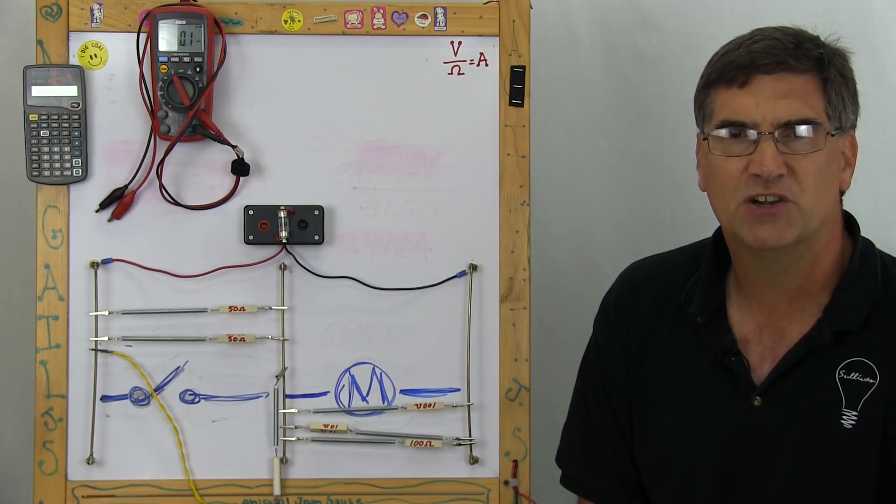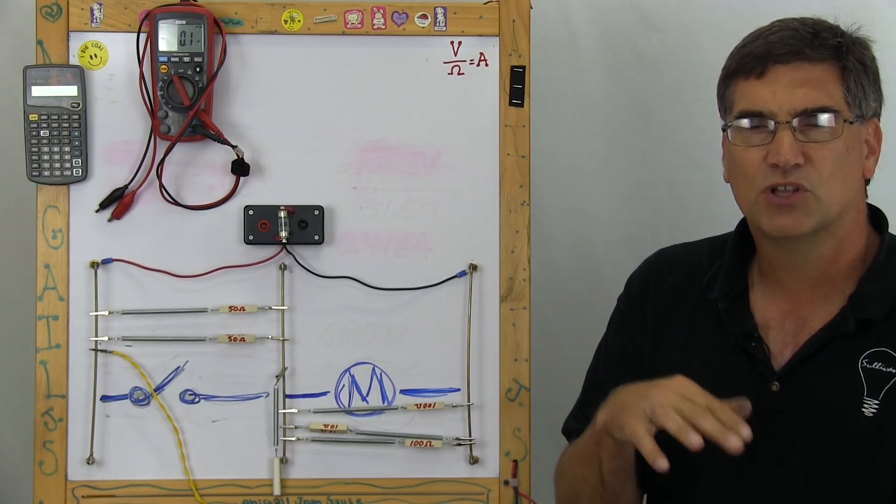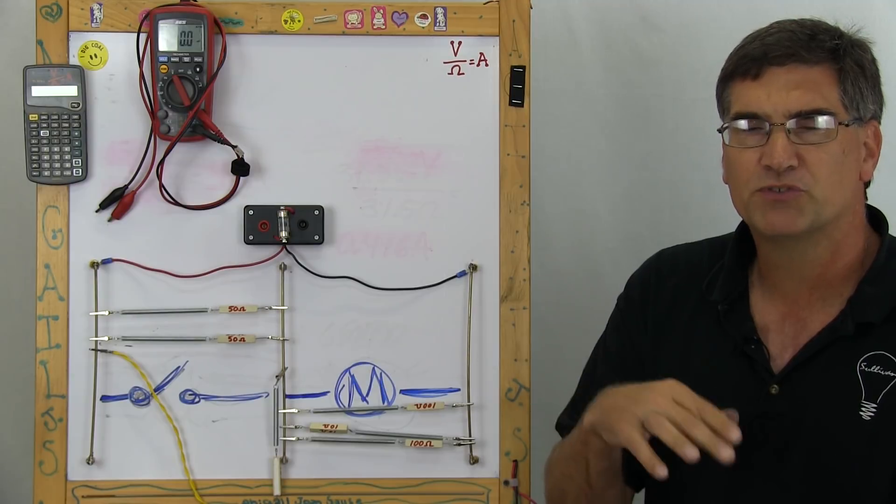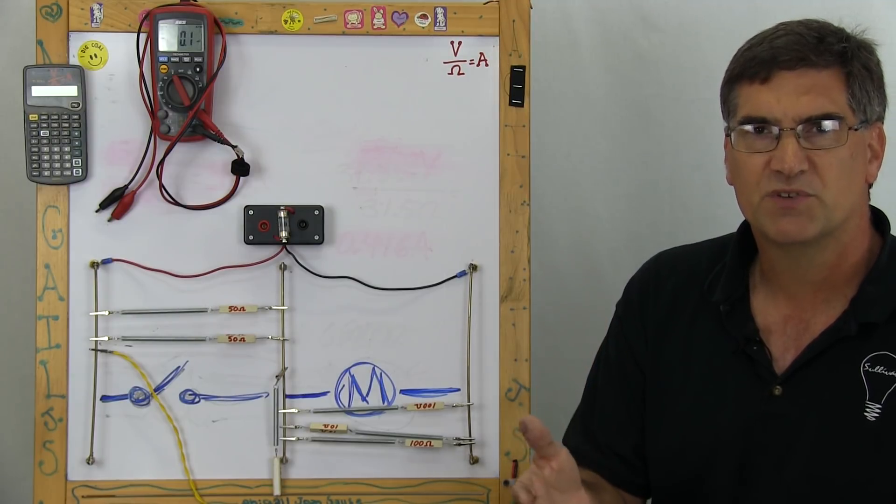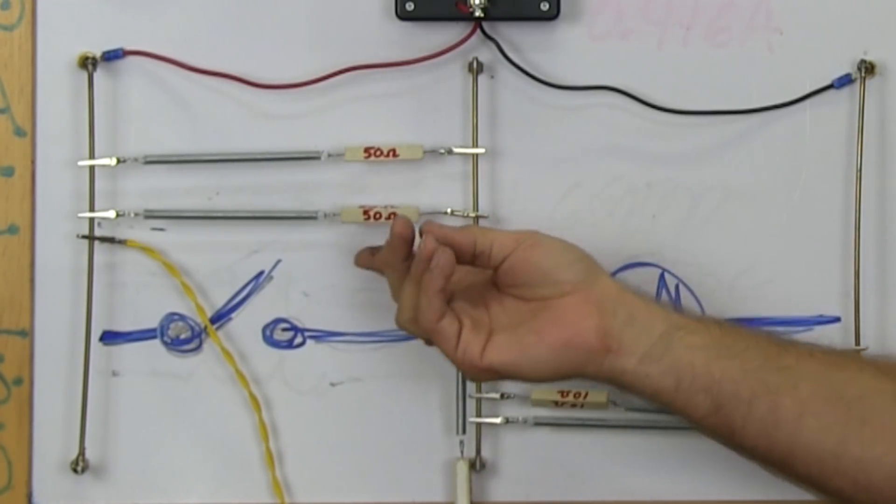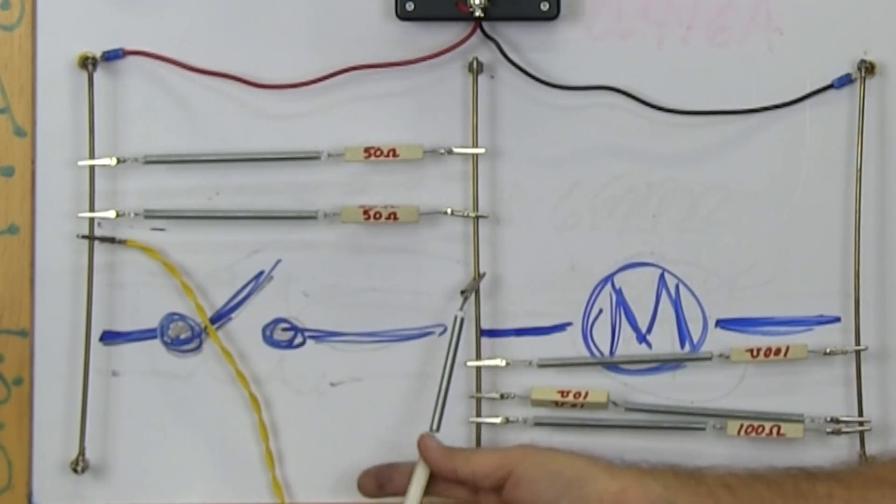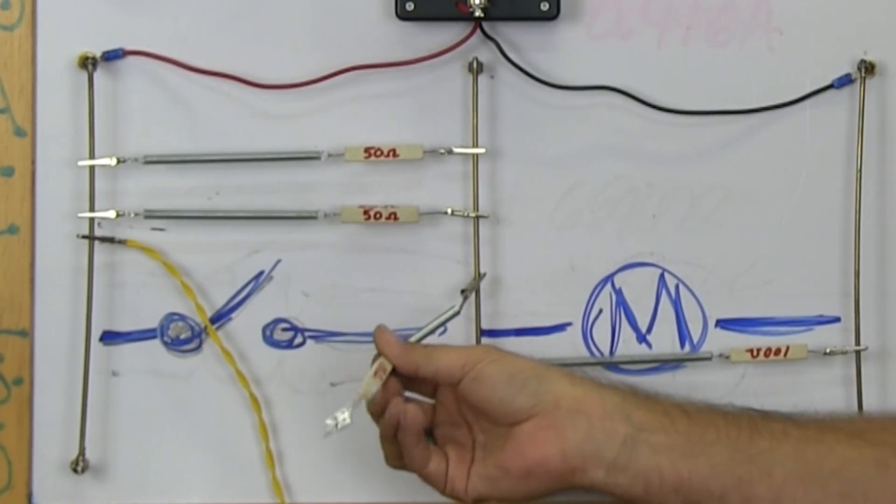The reason I chose 10, 50, and 100 is because of the ratio. If you get into the math, you remember Ohm's Law, the voltage drops and the resistances are proportional, so the 50 ohm resistor would drop the same as this 50 ohm resistor, but it would drop five times more than this 10 ohm resistor.